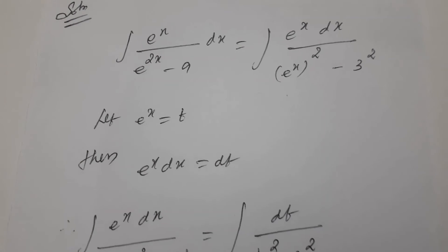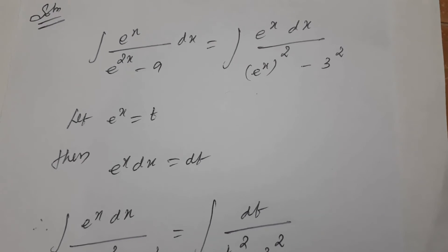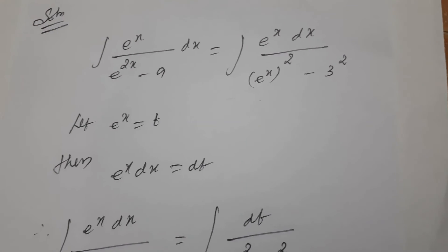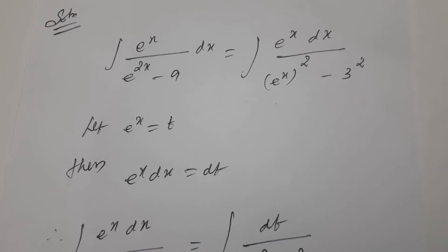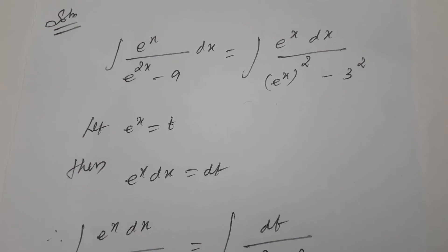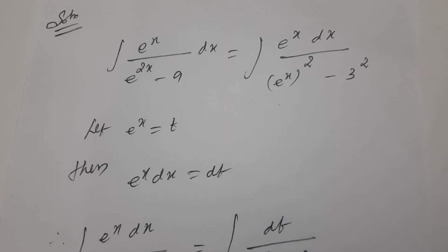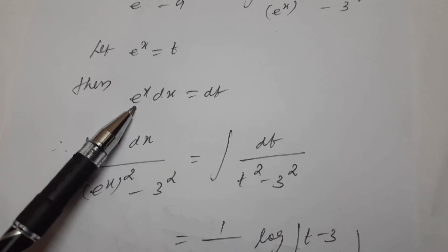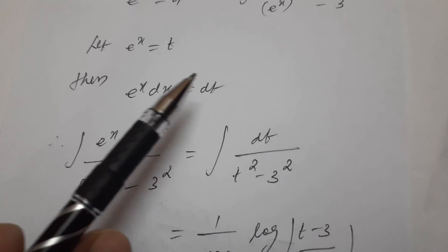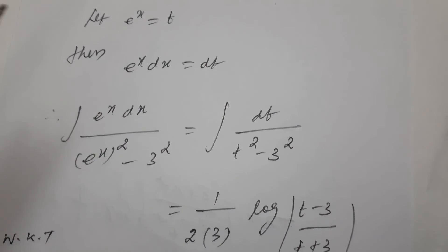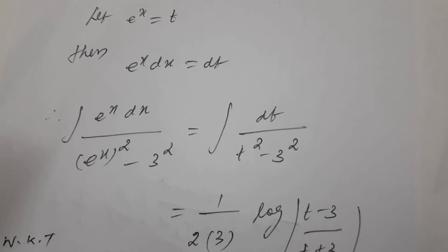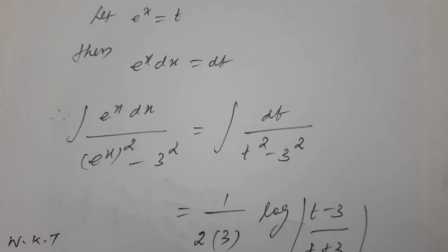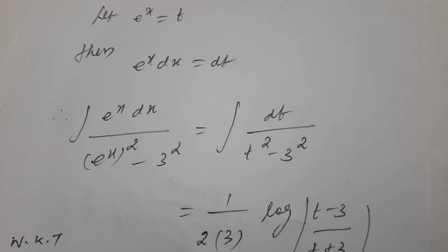The direct formula cannot be applied to e power 2x directly, so we put it in substitution form. Here e power x dx is equal to dt, and the expression becomes t squared minus 3 square.